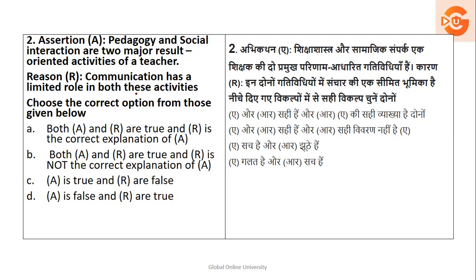Here we have the assertion: pedagogy and social interaction are two major result-oriented activities of a teacher. Pedagogy is a technique and approach towards teaching between a teacher and a student. Social interaction is an interaction within the society. These are the two major result-oriented activities which give outcomes. The reason given is: communication has a limited role in both these activities.